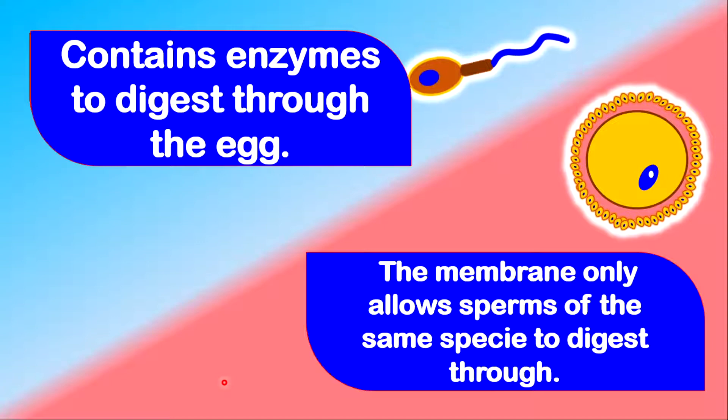The sperm cell contains enzymes that can digest through the wall of the egg. However, the egg cell will only allow one sperm to digest through the wall and cause fertilization. The mechanism of the egg cell will only allow sperms of the same species to digest through its wall.